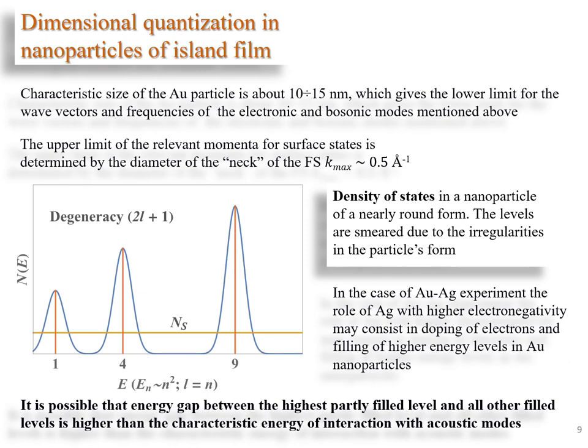Now we consider the effect of dimensional quantization in nanoparticles. If the nanograins were of a regular spherical form, they would possess a set of discrete quantum levels. The energies of the levels with orbital quantum numbers L equals N are roughly proportional to N squared, with 2N plus 1 degeneracy. In a more realistic case of flattened spheroid, the degeneracy of energy levels is lifted, but the density of states possesses sharp maximums determined by the characteristic size.